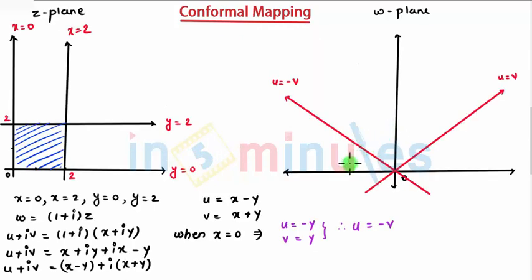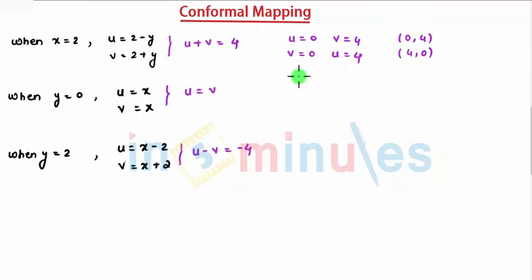I'll mark here the u axis and the v axis: 1, 2, 3, 4 on each axis. When you want to make this line, you have 0 comma 4 and 4 comma 0.